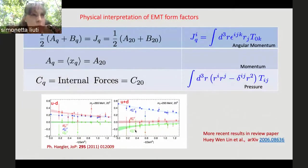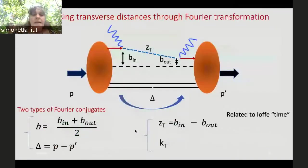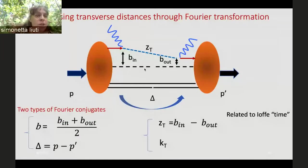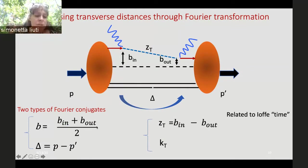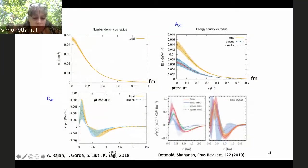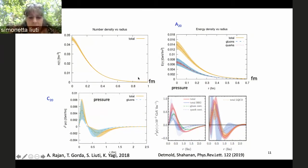These form factors depend on t, the four-momentum transfer squared. By Fourier transformation we get density distributions. The game with GPDs is a bit more complicated because we're accessing internal degrees of freedom, and there are two types of Fourier conjugates: b, the transverse position conjugate to the momentum transfer, and k_T. Calculations done by Barrage in collaboration with Tyler Gordon and Kantiagi write the different form factors taking Fourier transforms.